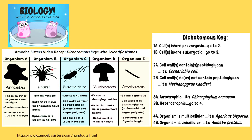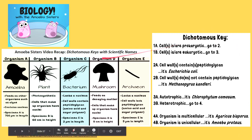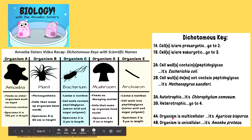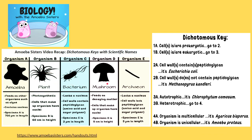This is a dichotomous key made specifically for a set of organisms — organisms A, B, C, D, and E. If you actually follow the steps and the dichotomous key, this would allow you to identify those organisms. You can check this out and explore it — linked in the description below.